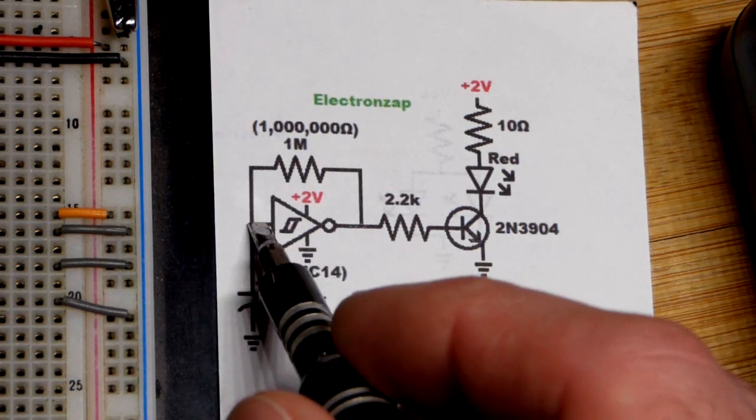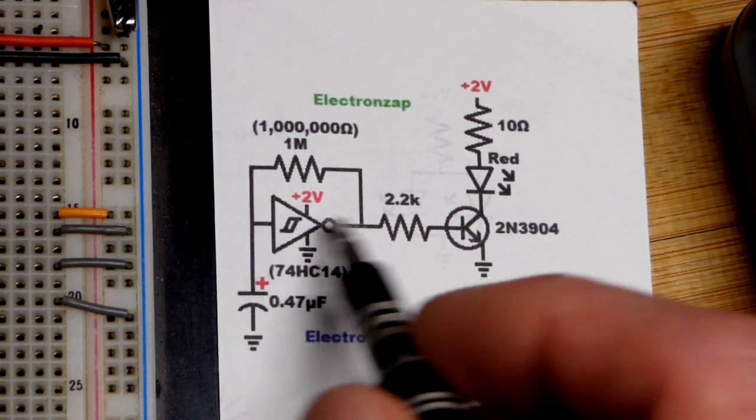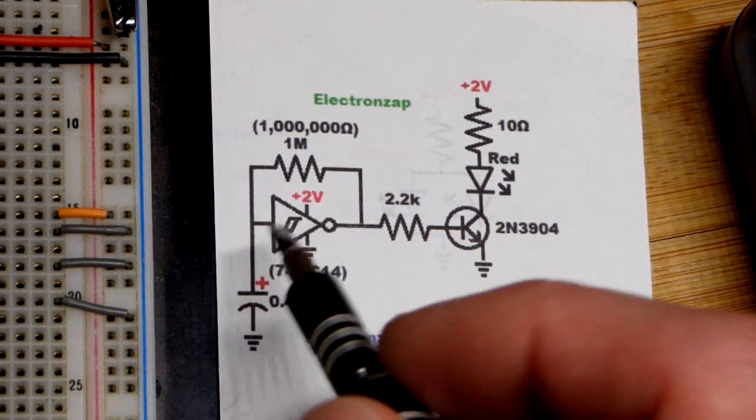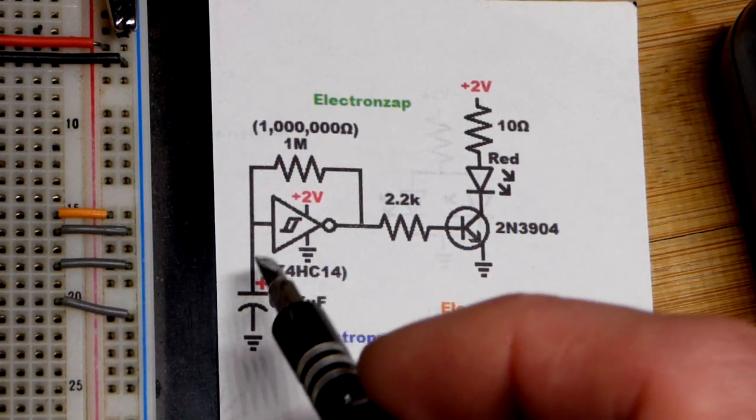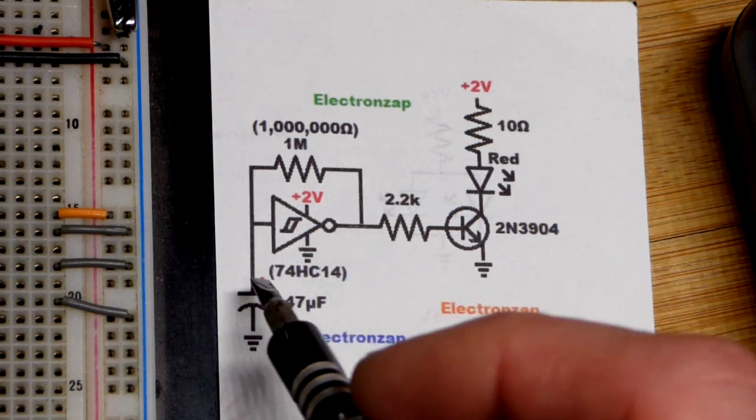We have the NOT gate. So the output is the opposite of the input. The input is low, then the output is high. Capacitor charges. Rises high enough, then you have a high input that sets the output low.